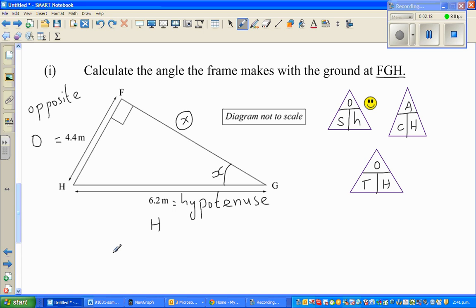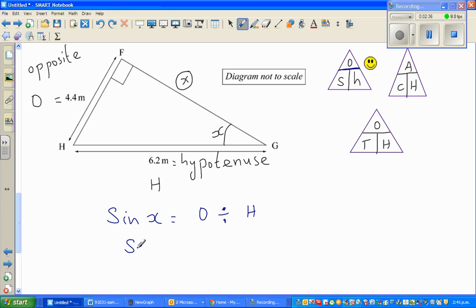We're going to write the formula. SIN of X is opposite over, divided by, hypotenuse. This line is a division line. You can see this as a division line. So I can say SIN of X is opposite, which is 4.4, divided by 6.2.